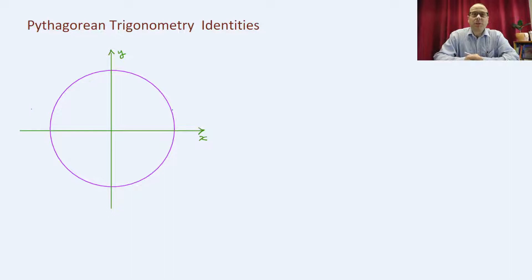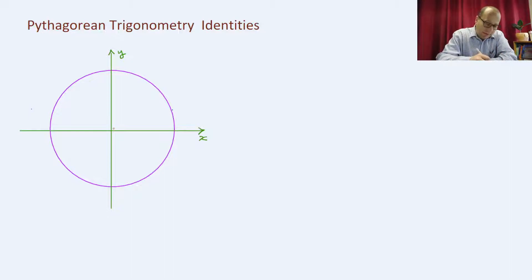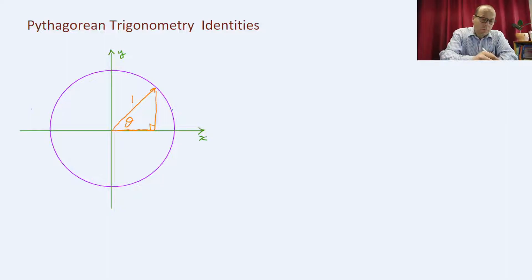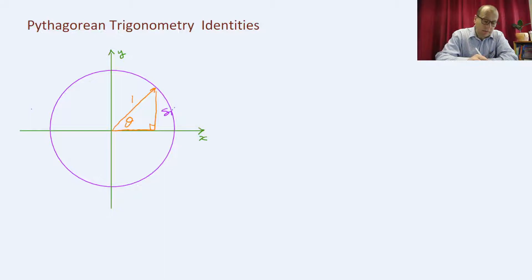I've drawn on the board the unit circle, which means the radius of that circle is 1. I now form a right angle triangle with the angle theta that the radius makes with the x-axis. The side opposite theta is sine theta, and the side beside it is cos theta.